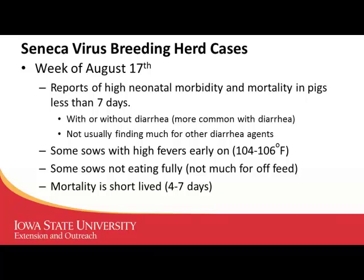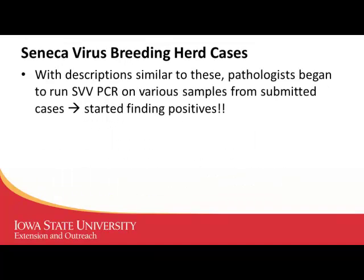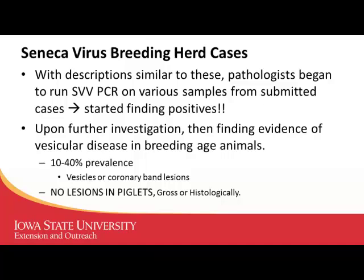The pathologist started screening these cases and we began finding positive cases with that kind of signalment. Most of the time there was no description or complaint from barn workers about vesicles on the nose or snout, and in our experience there wasn't really any significant lameness either. There have been a couple of sow farm reports with more obvious lameness, but once the diagnosis was made, the veterinarian would go in and report back that 10, 20, even up to 40 percent of sows in the building had vesicles on their snout or feet.